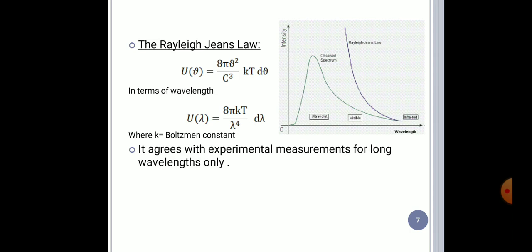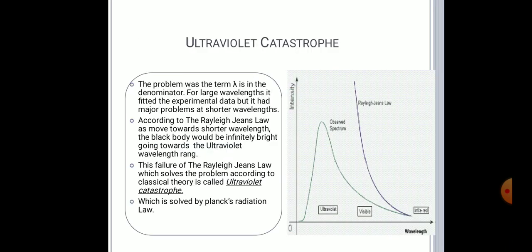This is not the form of the graph. The complete graph cannot be explained by this condition. This was telling us that the ultraviolet region will have infinite energy. That's why the ultraviolet catastrophe is also saying that this is a failure, an error in the calculation of the black body radiation spectrum.